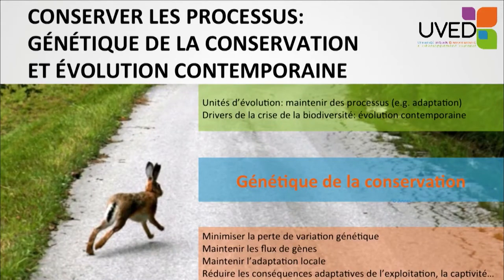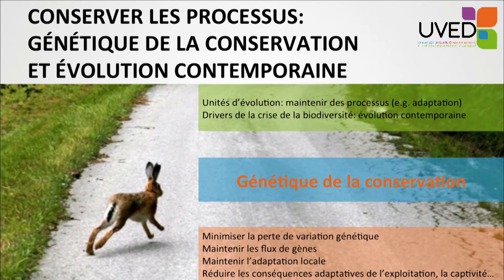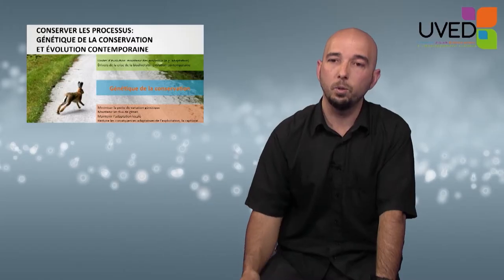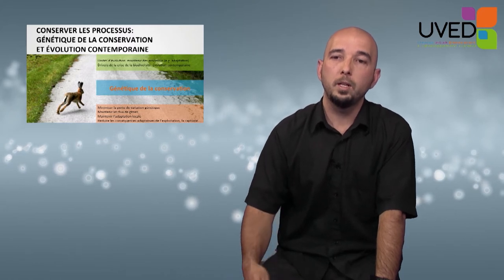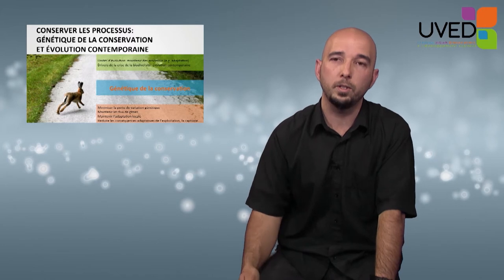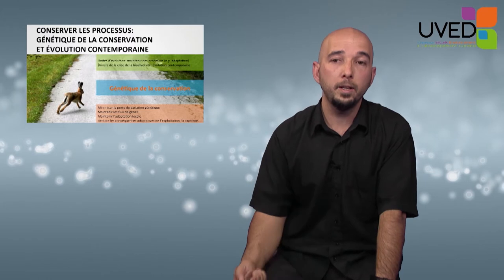If one wishes to preserve evolutionary units, it is not only to preserve a static heritage, but also evolutionary processes. Conservation sciences do not attempt to preserve a frozen biodiversity as it is now or was in the past, but rather to ensure continuity in evolutionary processes that constantly create new variants and eliminate old ones. One aim of conservation genetics is to manage rapid evolution by defining minimum population sizes to mitigate genetic variation loss while preserving gene flows between biological reserves and captive populations, establishing ecological corridors, preventing hybridization between long-diverged populations, and maintaining populations' capacity to adjust to local conditions.